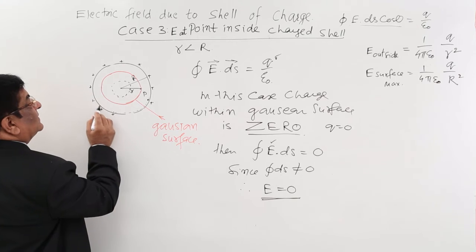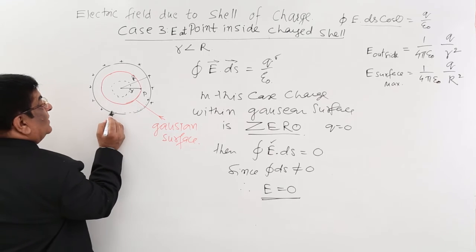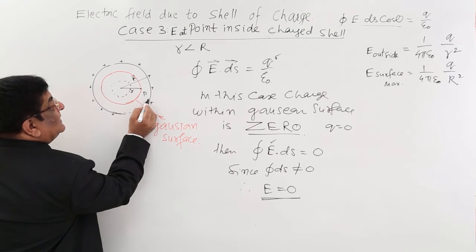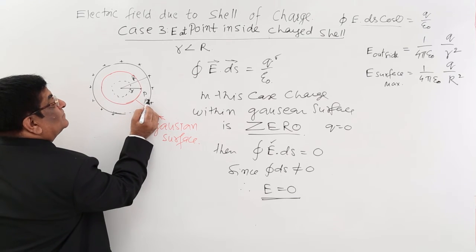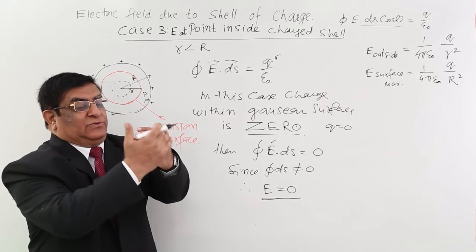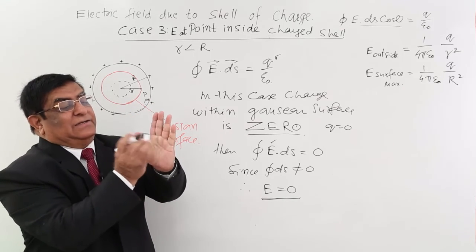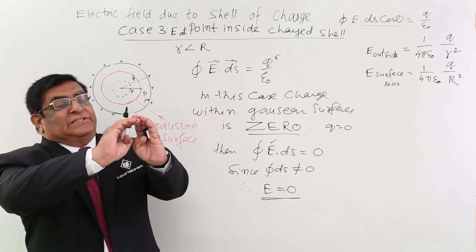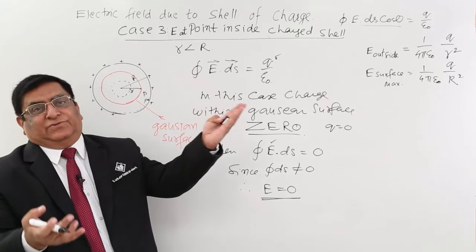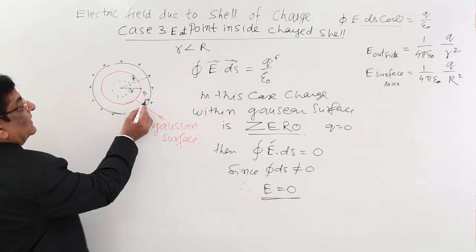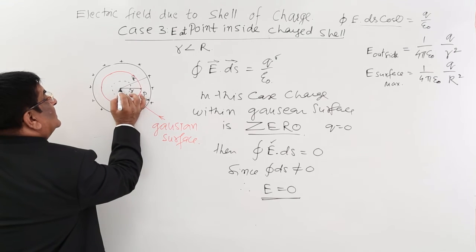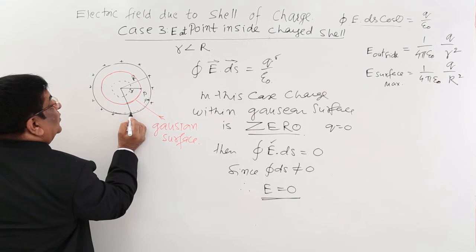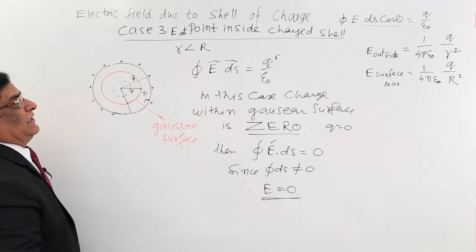So inside the surface there is no charge. Even if my Gaussian surface is at the outer or inner point P, even then if I draw another shell from here, the charge is outside, there is no charge inside. So here again electric field is zero. That means for this complete distance and anywhere point P is, electric field is zero.